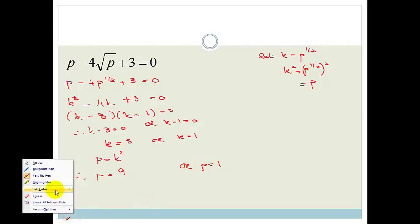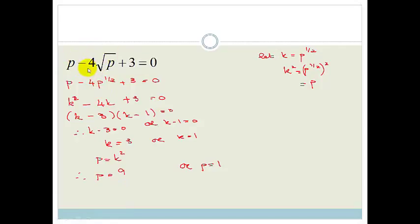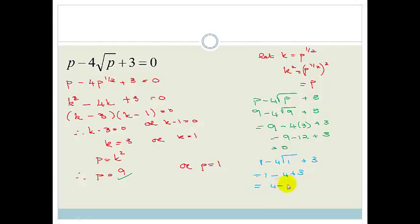And now again, we are not finished. We always have to check. So let's check it. We're going to substitute into this and see if we end up with 0. So we've got p minus 4 root p plus 3. So if we substitute in the 9, we've got 9 minus 4 times root 9 plus 3. So it becomes 9 minus 4 times 3 plus 3. So 9 minus 12 plus 3 equals 0. So yay, that number works. Let's try the p equals 1. So over here, we've got 1 for the p minus 4 times root 1 plus 3. So that becomes 1 minus 4 plus 3, which becomes 4 minus 4, which equals 0. So yay, they both work this time. Life is good.